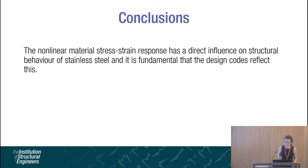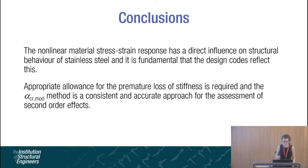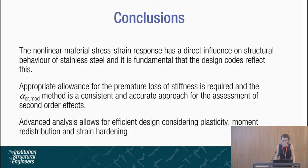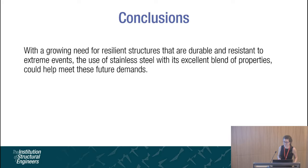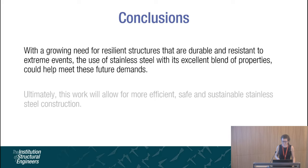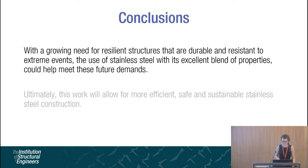To conclude: the non-linear material stress-strain behaviour has a direct influence on the structural behaviour of stainless steel and it is fundamental that the design codes reflect this. An appropriate allowance for the premature loss of stiffness is required, and the alpha-crit-mod method is a consistent and accurate approach for the assessment of second-order effects. Advanced analysis allows for efficient design considering plastic moment redistribution and strain hardening, and can be applied to all cross-sections. With a growing need for resilient structures that are durable and resistant to extreme events, the use of stainless steel with its excellent properties could help meet these future demands. Ultimately, this work will allow for more efficient, safe and sustainable stainless steel construction.